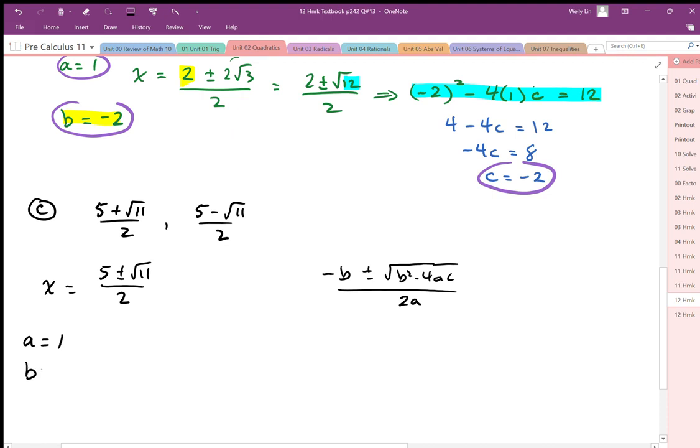So if a is equal to 1, then I'm going to get a b value. I'm going to match up the b parts here, so that 5 should match the negative b in the quadratic formula. And I can then solve for the b value here as b is equal to negative 5.